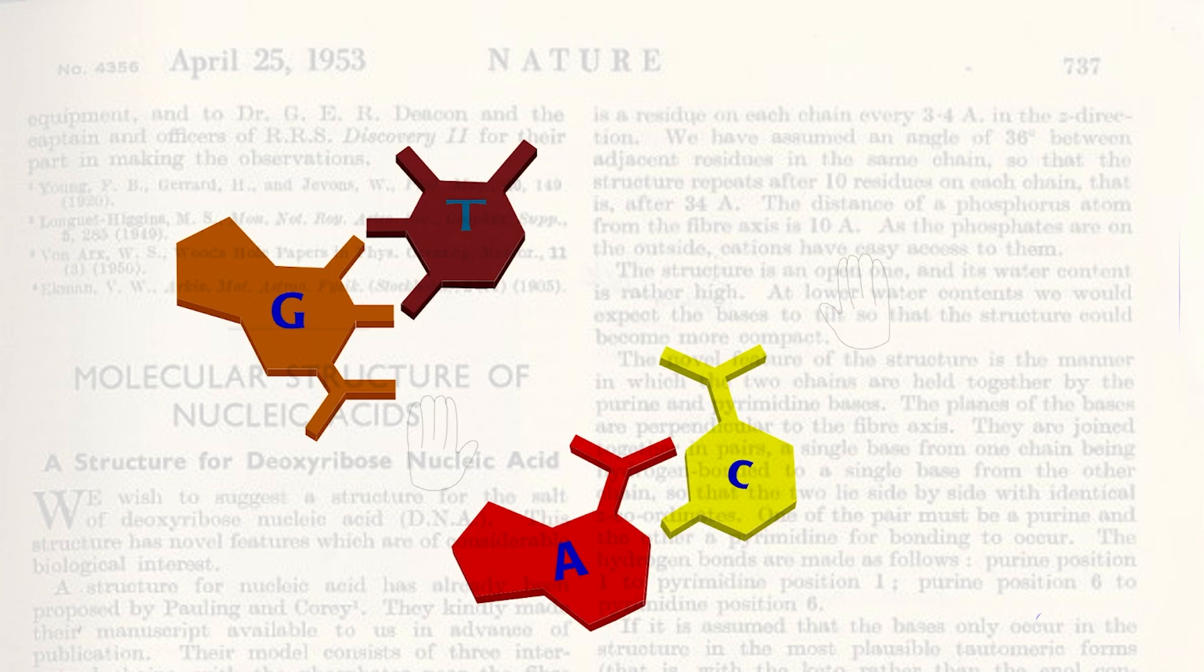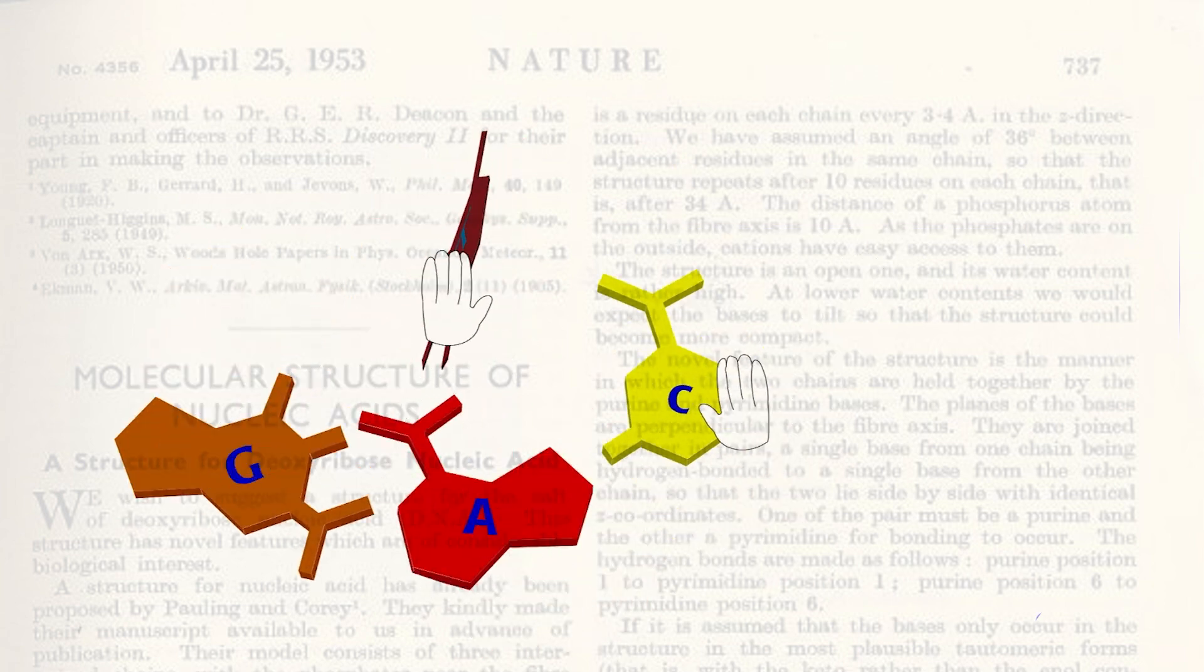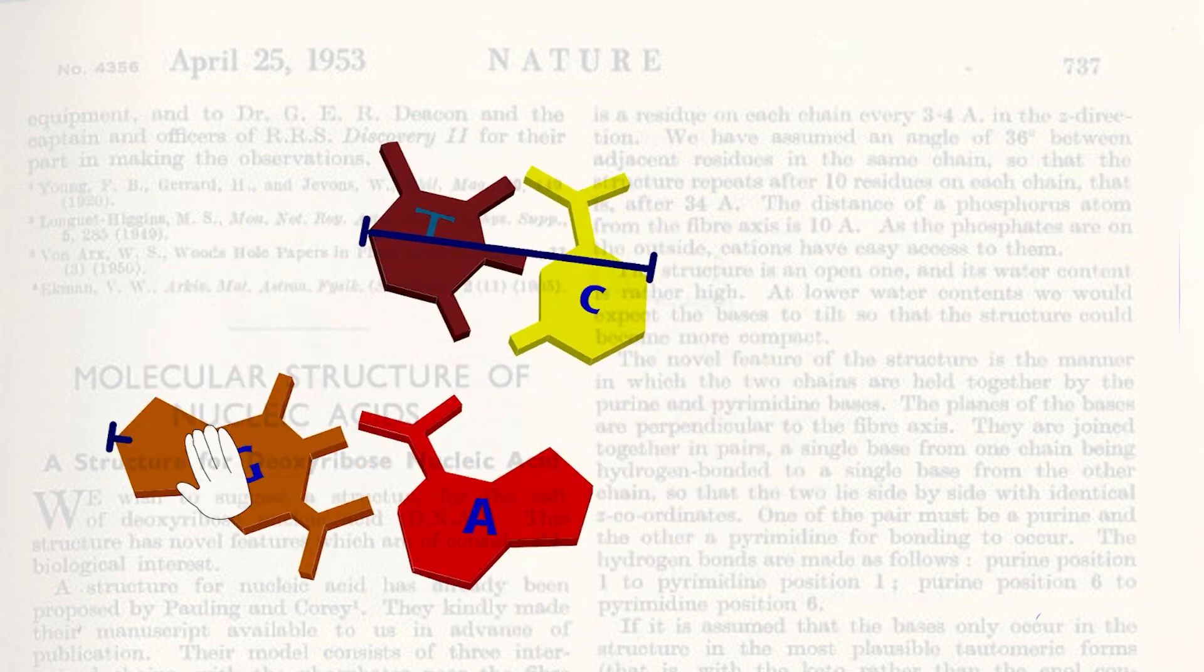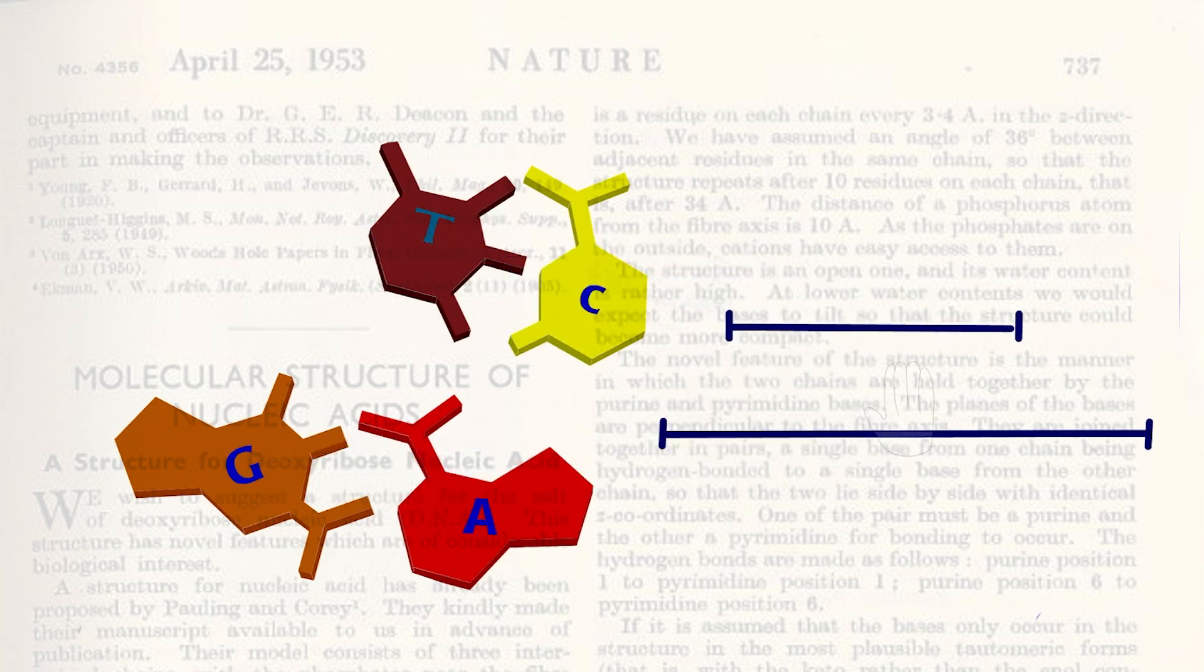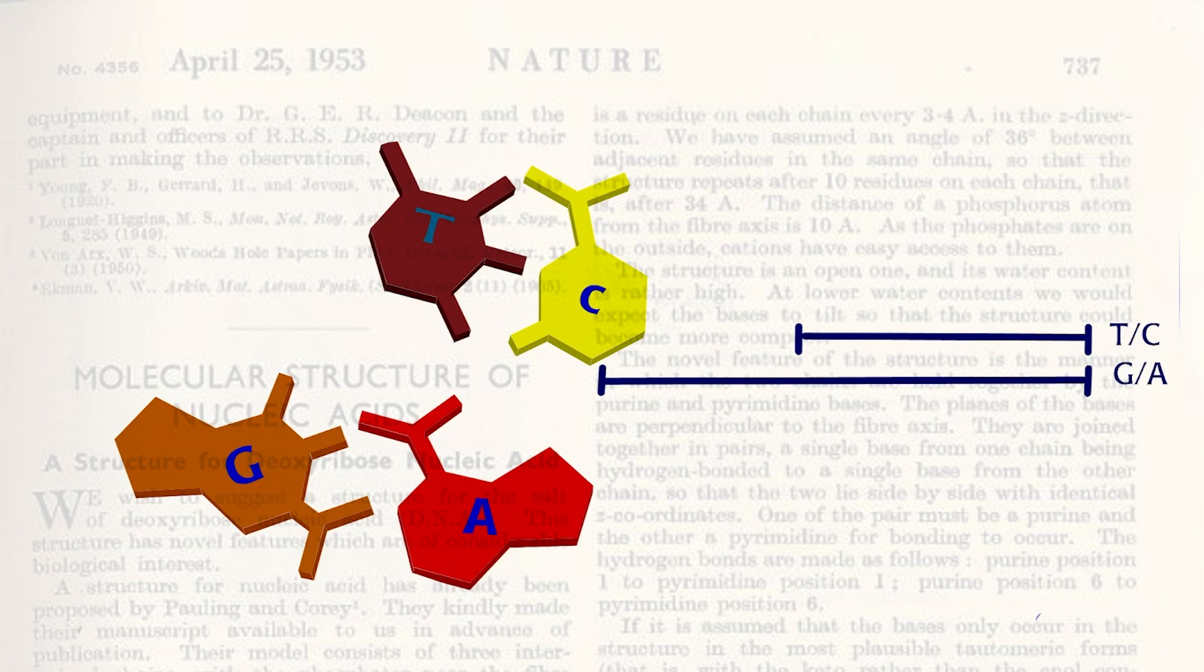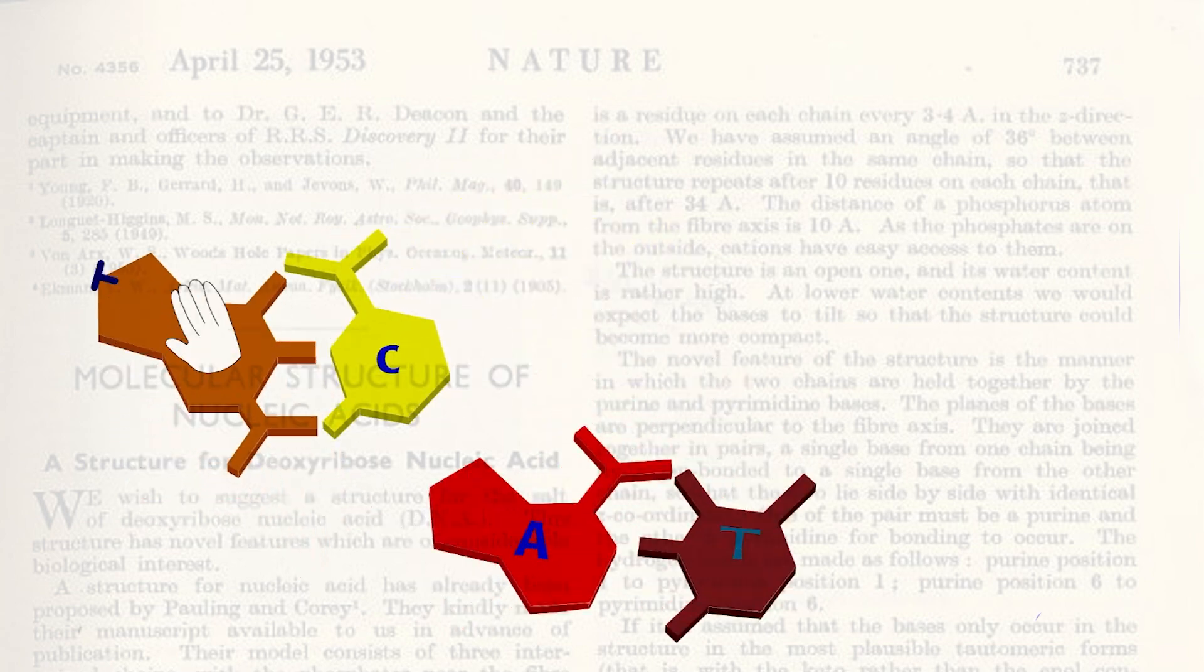He compared the width of different hydrogen bond pairs. Some pairs were obviously different in width. If these pairs really occurred in the DNA helix, then the helix would be uneven and would bulge in and out. He realized that adenine could pair closely with thymine, and guanine could pair closely with cytosine. Moreover, the AT base pair was about the same width as the GC base pair.